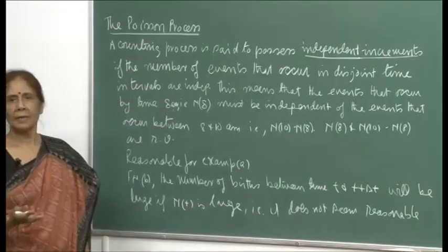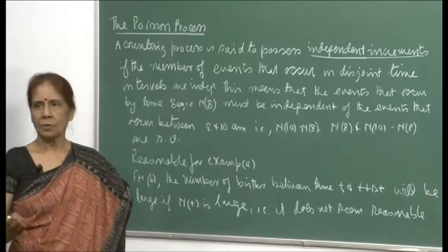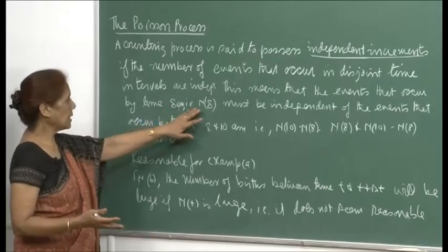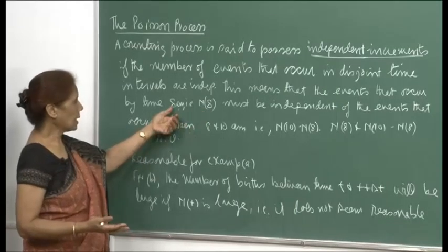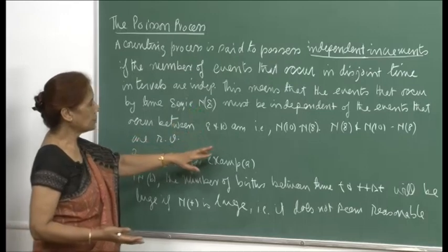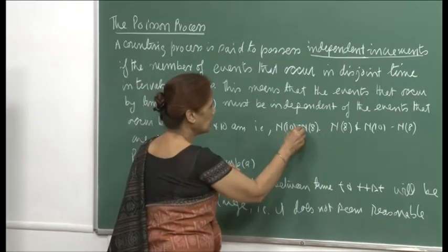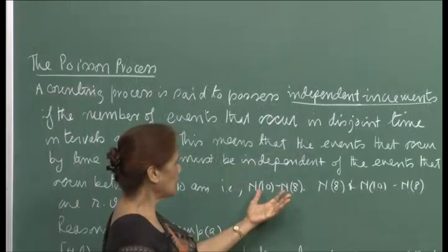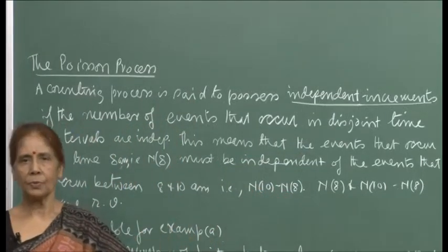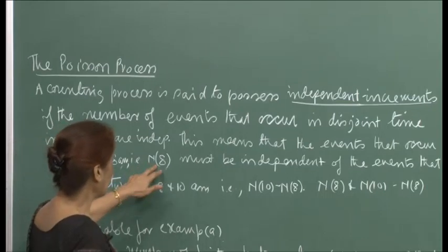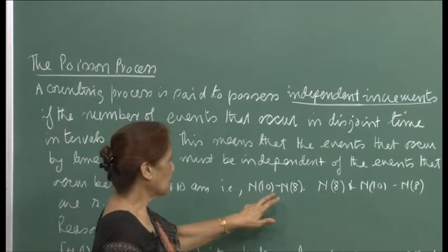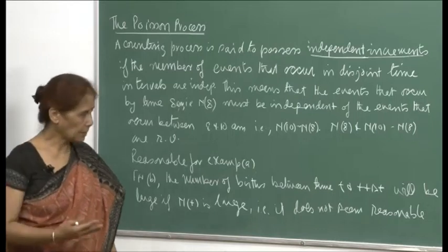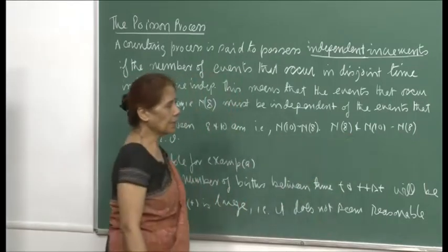For example, if you are counting up to 8 a.m., then N(8) would be the number of events that have occurred up to time 8. That N(8) will be independent of, say, the number of events that occurred between 8 and 10 a.m., that is N(10) minus N(8). Both these are random variables, and since the intervals are disjoint — 0 to 8 and 8 to 10 — the corresponding random variables must be independent.